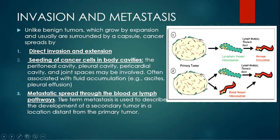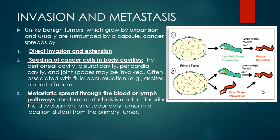Metastasis describes the development of a secondary tumor in a location distant from the primary tumor. It is actually the same tumor type occurring distantly. For example, if the primary tumor is in the ovaries, this secondary tumor spreads via blood or lymphatic vessels, travels to a new location, starts invading, and forms a secondary tumor — that is called metastasis.